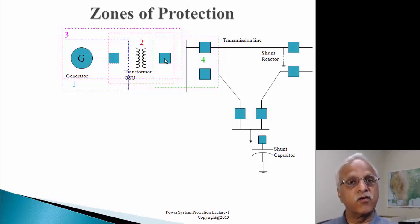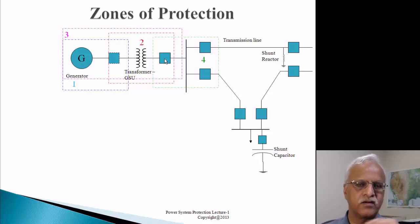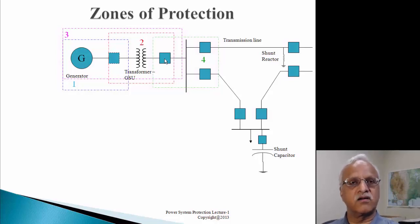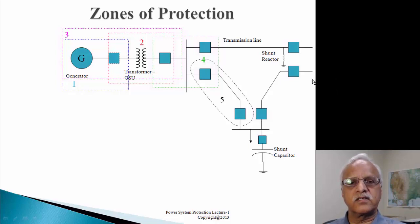Whatever current flows into the bus must equal what flows out. As you know, the sum of currents at any junction must equal zero. If there is a difference, we know there is a leakage, a fault, or another current path. We trip the bus - meaning we open all the breakers associated with that equipment. Similarly, if there is a fault on a transmission line, we open breakers at both ends of the line.